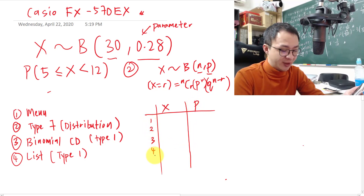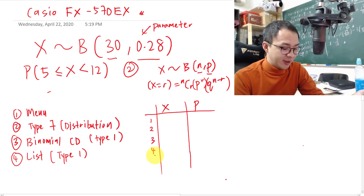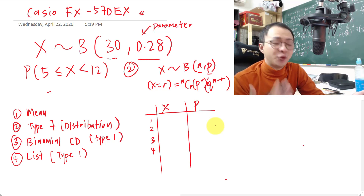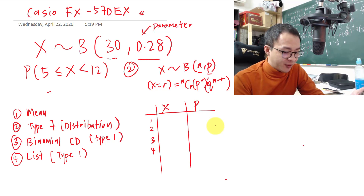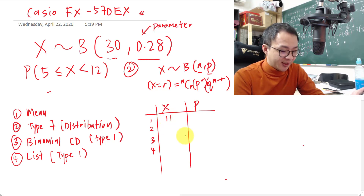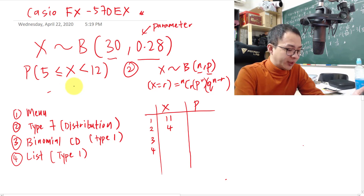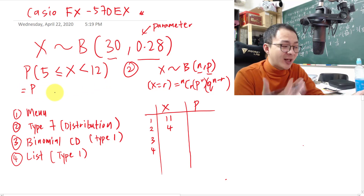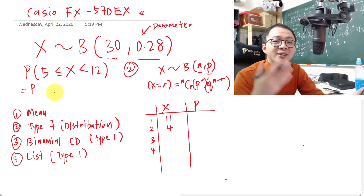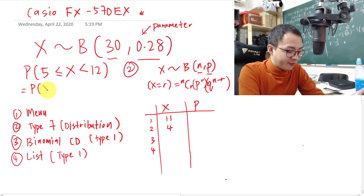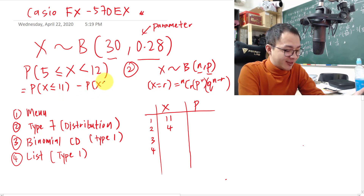Here's the tricky part: what values to key in? Since CD is cumulative, I'll first key in 11, then key in 4. The reason is that to get P(5 ≤ X ≤ 11), I need P(X ≤ 11) minus P(X ≤ 4).